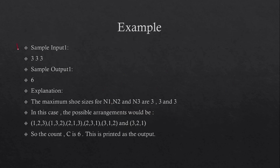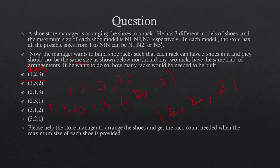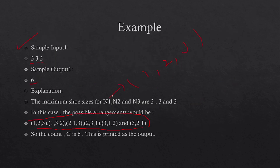In the first example, n1=3, n2=3, n3=3, and the output is 6. All triplets satisfy the four conditions: n1 values are from 1 to 3, n2 values are from 1 to 3, n3 values are from 1 to 3, all sizes in each triplet are different, and no arrangement is repeated.